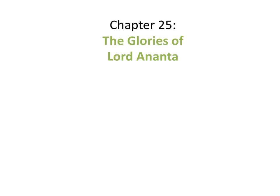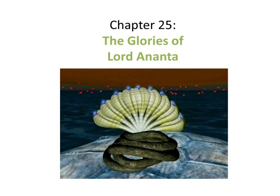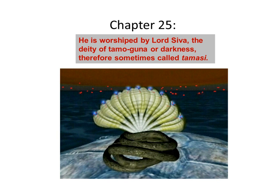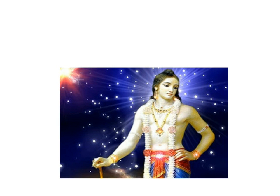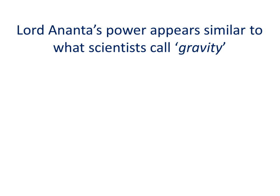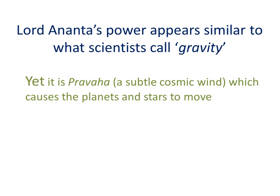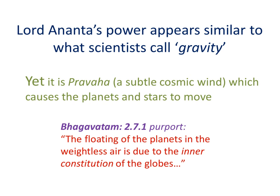Chapter 25, the glories of Lord Ananta. It's understood that between the top of the Garbhodaka Ocean we have this many-headed snake who's basically holding all the planetary systems on his heads. He's worshipped by Lord Shiva, the deity of tamo-guna or darkness — therefore Ananta is sometimes called Tamasi. But who is the origin of Lord Ananta? He is an expansion of Lord Balarama. Although he has a difficult role and becomes very angry and destroys the universe at the end of time, ultimately it is Lord Balarama and the arrangement of the Lord. Lord Ananta's power appears similar to what scientists call gravity, holding up the planets in their orbits. Yet it is pravaha — a subtle cosmic wind — which causes the planets and stars to move. In the second canto purport of the Bhagavatam, Prabhupada writes: 'The floating of the planets in the weightless air is due to the inner constitution of the globes.'